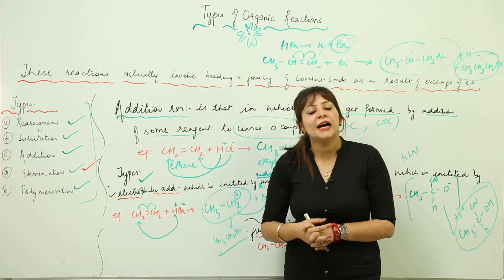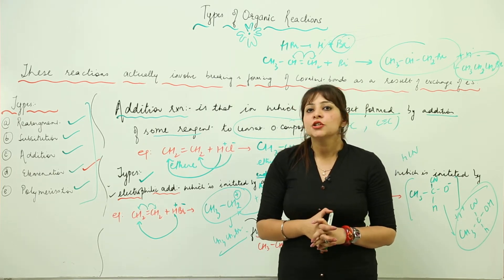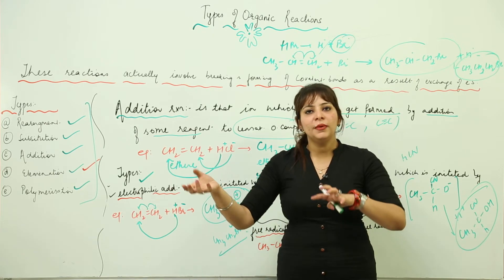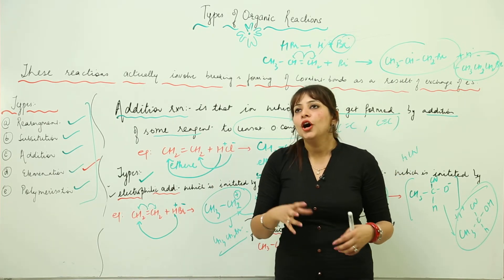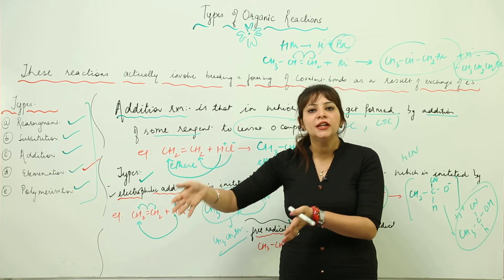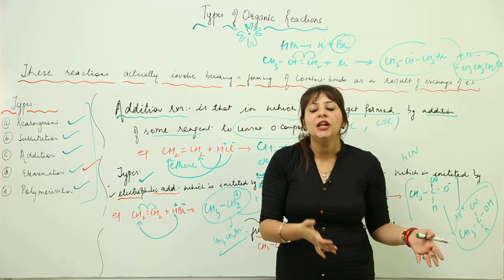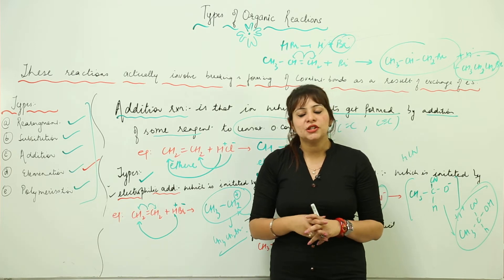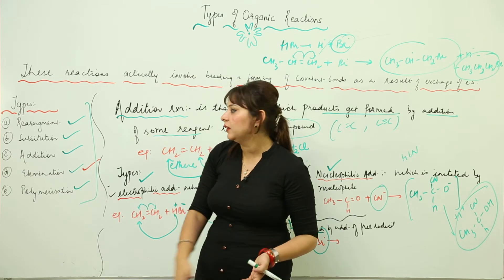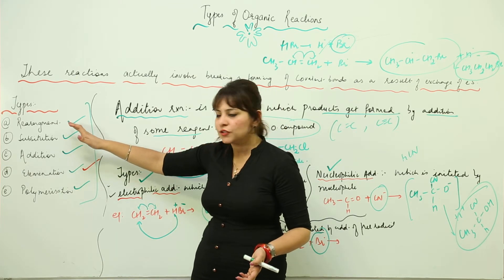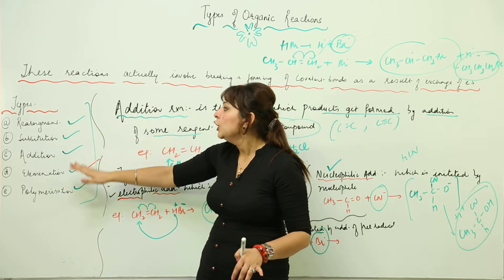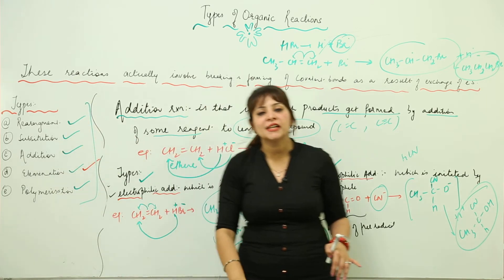Apart from these reactions, you may also encounter isomerization reactions. Isomerization is a kind of rearrangement where one isomer converts into another — for example, 2-butanol becoming 3-butanol. These are actually a subtype of rearrangement reactions. Though the conditions are different, they are the isomerization ones.